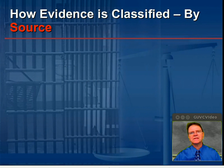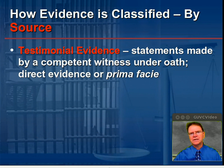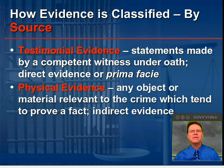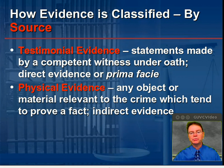Now, evidence is classified first by its source. There are basically three sources we're going to look at. First, testimonial evidence. These are statements that are made by a competent witness under oath, also known as direct evidence or prima facie evidence. Next, physical evidence — that could be any object or material relevant to the crime which tends to prove a fact. We also refer to this sometimes as indirect evidence.